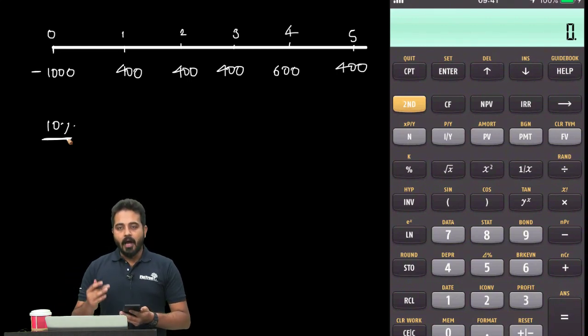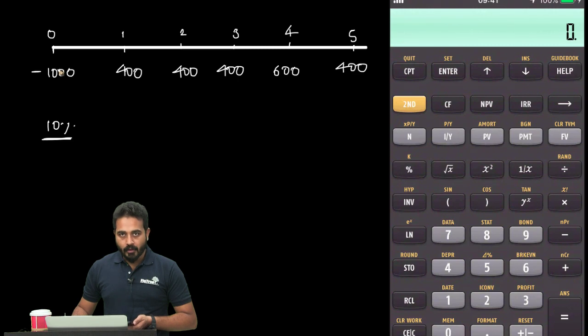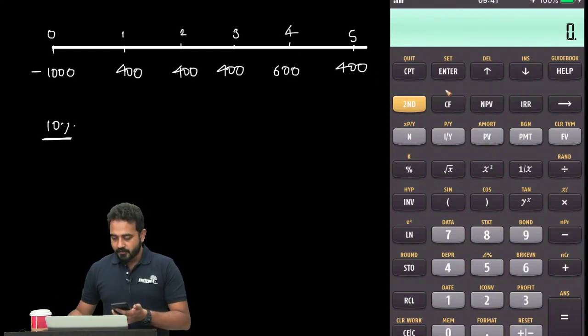In this video, we will learn how to use the frequency function within the cash flow function. Let's say we have a stream of cash flows: we've invested $1,000 at the beginning, for the first three years we receive $400 each, then we receive $600, then we receive $400.